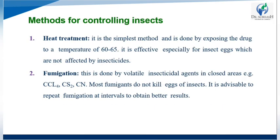Now we see methods of controlling insects. First method: heat treatment — the simplest method, done by exposing the drug to a temperature of about 60 to 65 degrees Celsius. It is effective especially for insect eggs which are not affected by insecticides. At the higher temperature, insect eggs that are unaffected by insecticidal powders are killed.